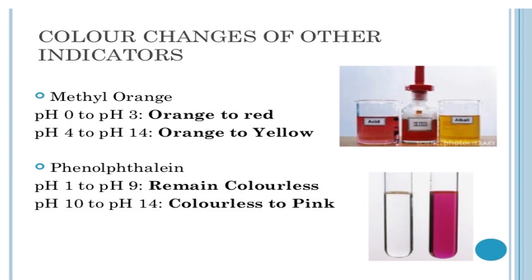Methyl orange has a pH range of 3 to 4, appearing orange to red, and at pH 4 to 14 it is orange to yellow. Phenolphthalein remains colorless from pH 1 to 9, and from pH 10 to 14 it changes from colorless to pink.